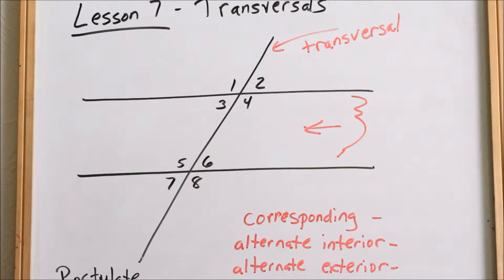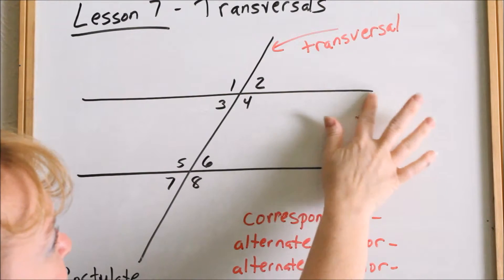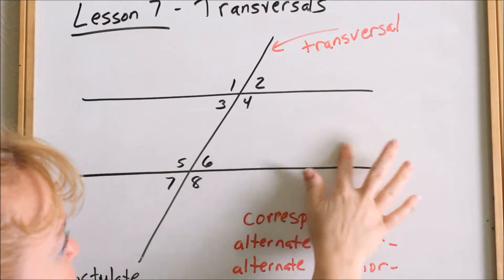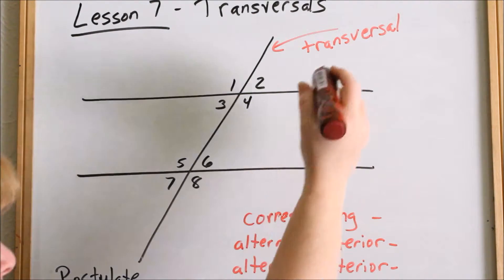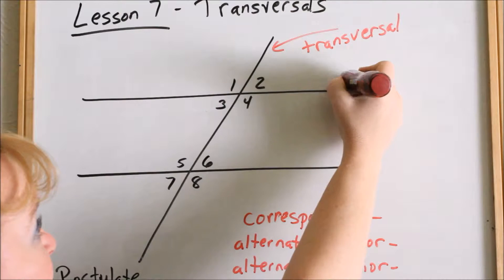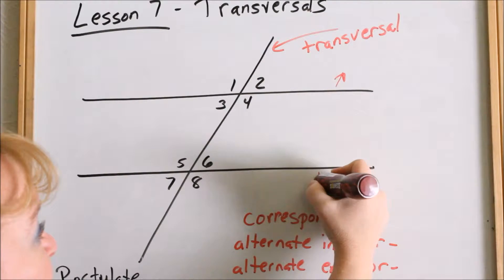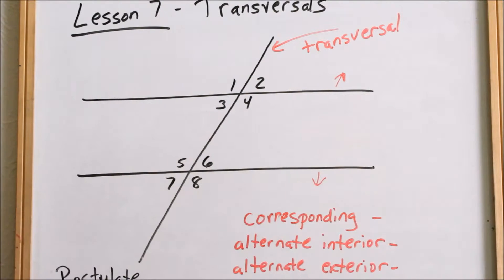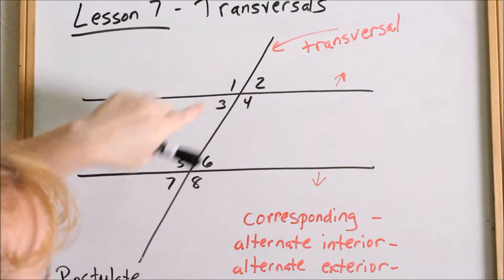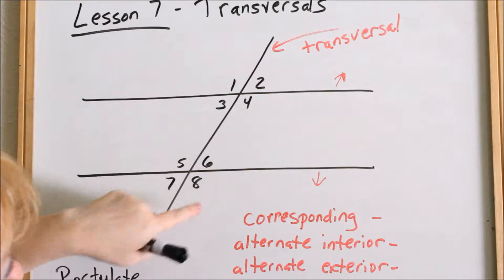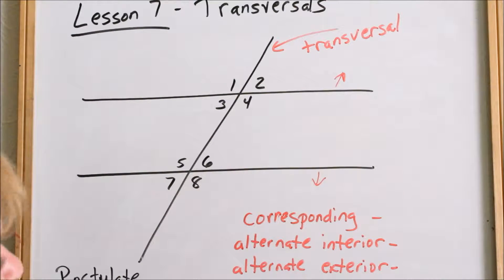Or you create exterior angles. Exterior means exactly that — angles that are outside the parallel lines. Angles one, two, seven, and eight are exterior.